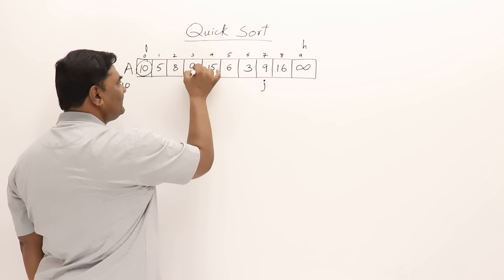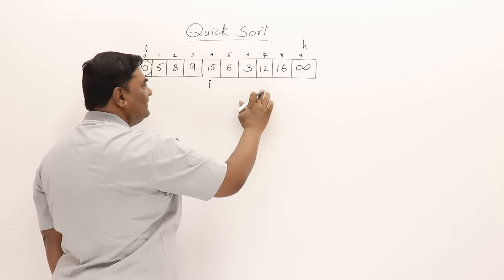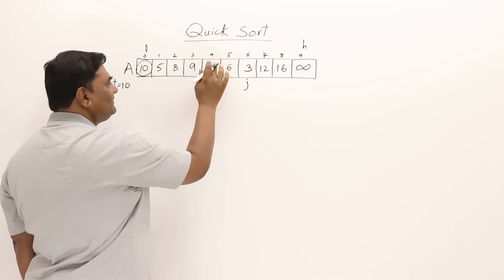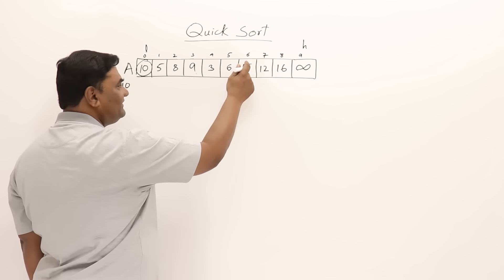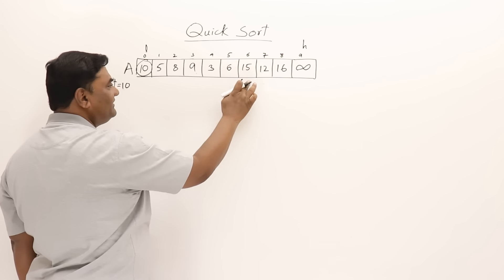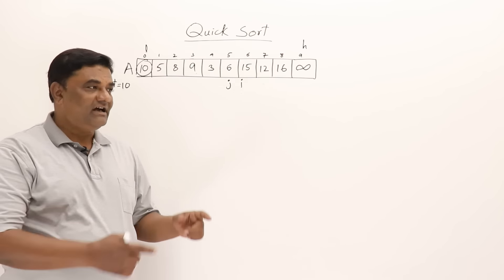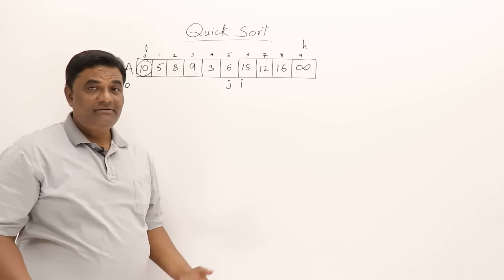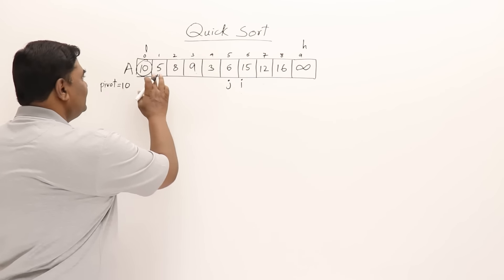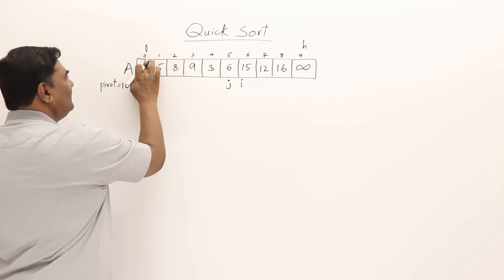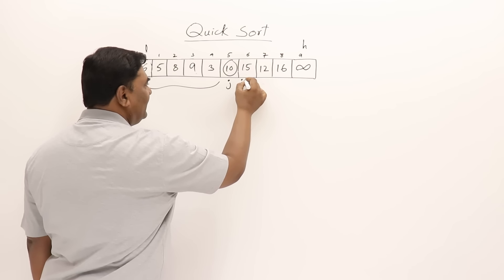9 comes here and 12 goes there. Continue: I finds the next element greater than pivot and stops. J decrements — 3 comes to this side and 15 goes to that side. Continue incrementing I — it finds an element greater than 10 and stops. Decrement J — it finds an element smaller than 10 and stops. Now I has crossed J, meaning I is greater than J. We do not interchange the elements this time. The position of the pivot is wherever J is pointing.